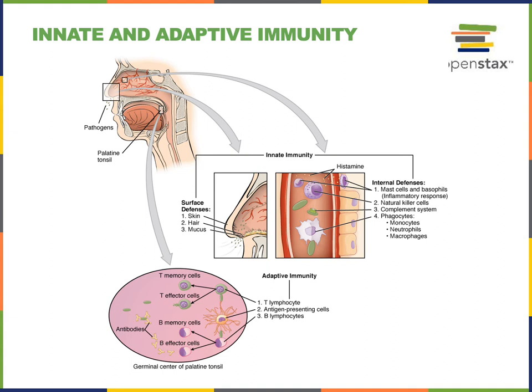Macrophages are leukocytes that form from monocytes. After a monocyte exits the blood, it travels into a tissue and differentiates into a macrophage. Monocytes, neutrophils, and macrophages are all phagocytic cells that can engulf and degrade pathogens. These are all part of the innate immunity that you are born with.